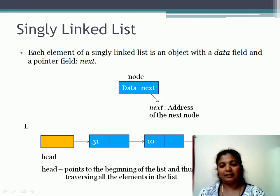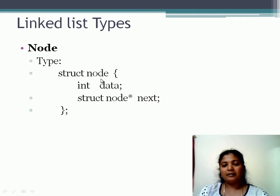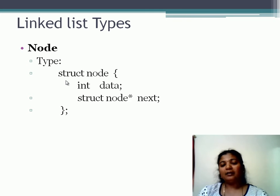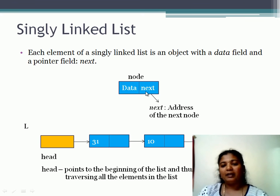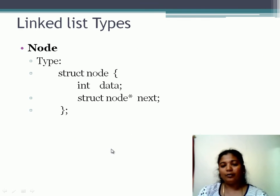Having seen the structure of the list, how do we define a node? The node has two parts: data and next. In C programming language, we use a data type known as structure, which allows declaring a variable that holds elements of different types. Here, data is of type integer, but it can also be float, character, string, or double. The pointer next is of type node again, because it points to a node of the same type. So we have an int data and a pointer next of node type, embedded within the structure node.